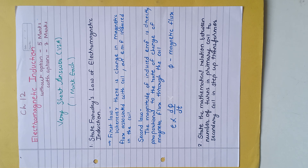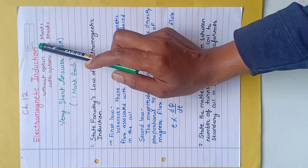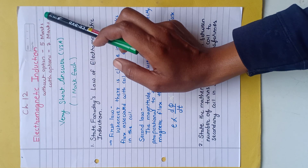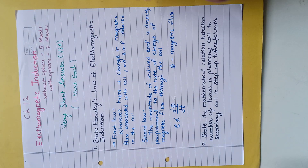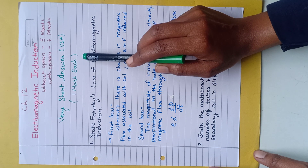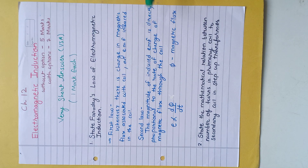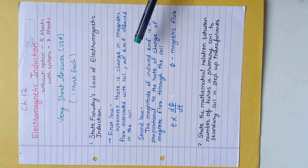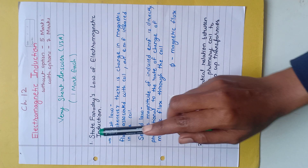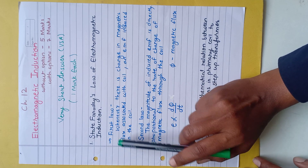This is the chapter Electromagnetic Induction. This chapter carries 5 marks without option and 7 marks with option. We are going to solve our first type of question — one-mark questions, very short answer (VSA), which comes under Section A. Each question carries one mark. The first question is from the question bank provided by the Maharashtra Board.